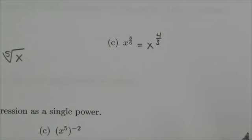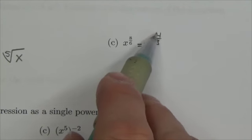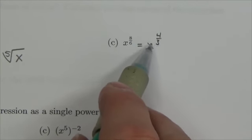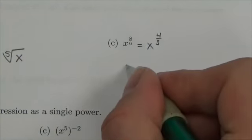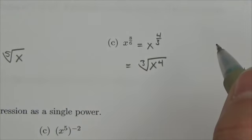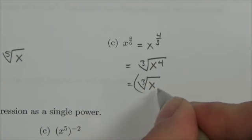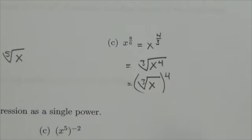In which case, the exponent on the base is going to be 4, the power is going to be 4, and the corresponding root index is going to be 3. So this will be the cube root of x to the fourth, or if you want, it's going to be the cube root of x, all to the fourth.